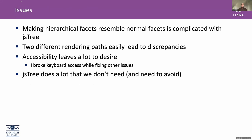This current implementation has some issues that are causing trouble almost all the time. Making the hierarchical facets resemble normal facets in JSTree is kind of complicated. These two different rendering paths — one for normal facets and one for hierarchical facets — have led to some discrepancies quite a few times. There are also some accessibility issues; for example, during the last round of improvements, I managed to break keyboard access quite completely. JSTree also does a lot that we don't need, and some things we need to work around.